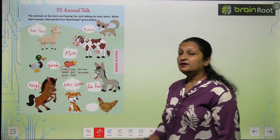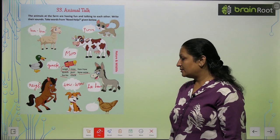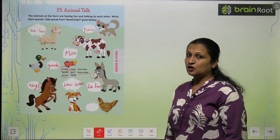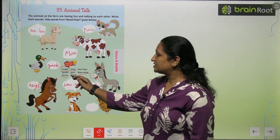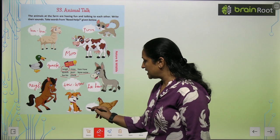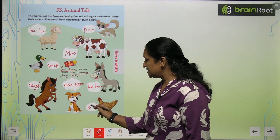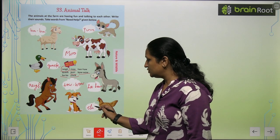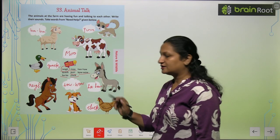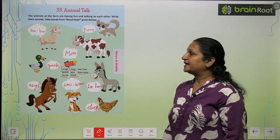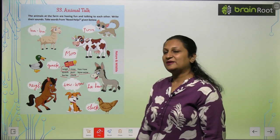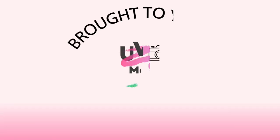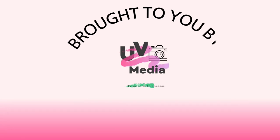This is a hen. Hen कैसी sound produce करती है? It produces a cluck sound. So you will write C-L-U-C-K — cluck. Like this, you are going to complete this page.